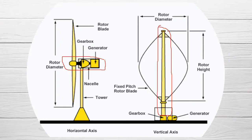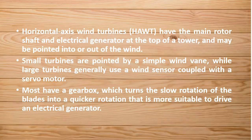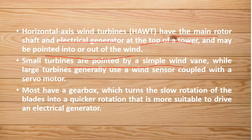Let's look at horizontal axis wind turbines in detail. Horizontal axis wind turbines have the main rotor shaft and electrical generator at the top of the tower, and may be pointed into or out of the wind. Small turbines are pointed by a simple wind vane, while large turbines generally use a wind sensor coupled with a servo motor. Most have a gearbox which turns the slow rotation of the blades into a quicker rotation more suitable to drive an electrical generator.